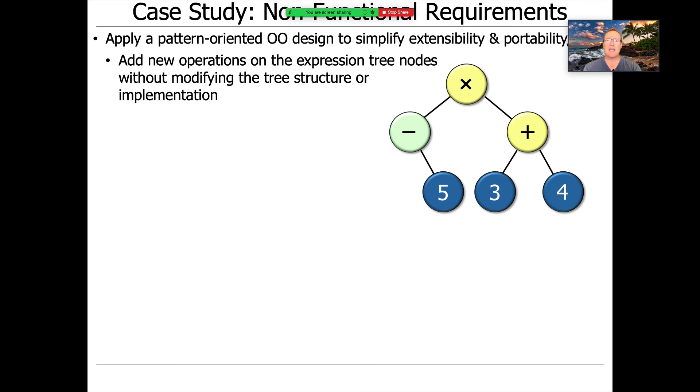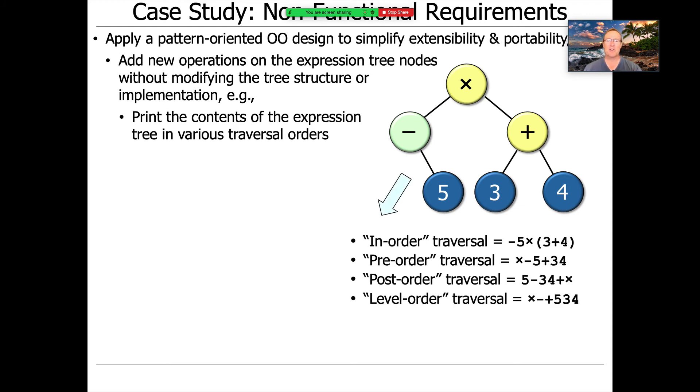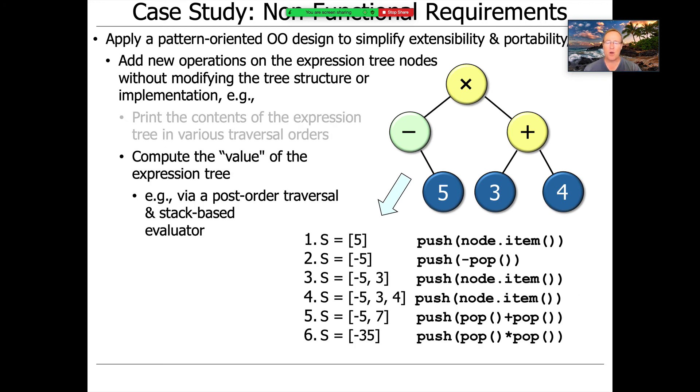So what do we really mean? What does it mean to extend things? How does that relate to non-functional properties? Well, one thing we'd like to be able to do is we'd like to be able to take our expression tree, and we'd like to be able to add new operations on it without making any changes to the design or the implementation of the existing tree structure. So we want to be able to keep things exactly as they are and add new capabilities. That's hard to do with your hacked up 100 lines of C code. So here's some examples. We want to be able to have all kinds of different ways to print the order of the expression tree to meet those requirements. We want to be able to have different ways of computing the value of the expression tree, doing things like post-order traversal and stack-based evaluation.